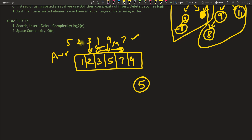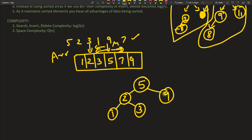5 is first, so it becomes the root. 2 is less than 5, so 2 goes left. 3 is less than 5 so it goes left, but 3 is greater than 2, so it comes to the right of 2. 1 is less than both, so it goes here. 9 is greater than 5, so it goes right. 7 is greater than 5 but less than 9, so it comes to the left of 9. This is how your binary search tree is constructed.